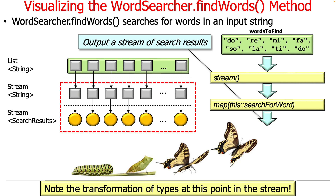Notice how we went from a list of strings to a stream of strings — we didn't convert the types, we converted the representation, either in a collection versus a stream. Then when we applied the map operation, we didn't change whether it was a stream — it's still a stream — but it's a stream of a new type: a stream of search results. This demonstrates interesting things about intermediate operations: you can use them to convert types, kind of like a butterfly being converted from a caterpillar.